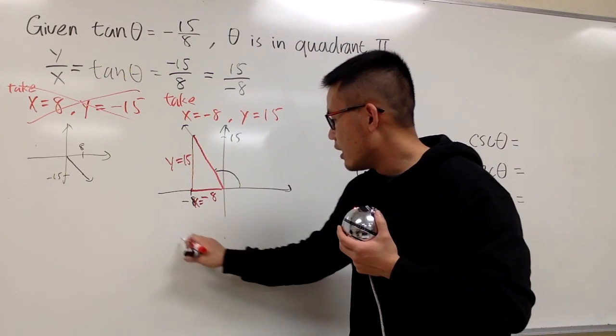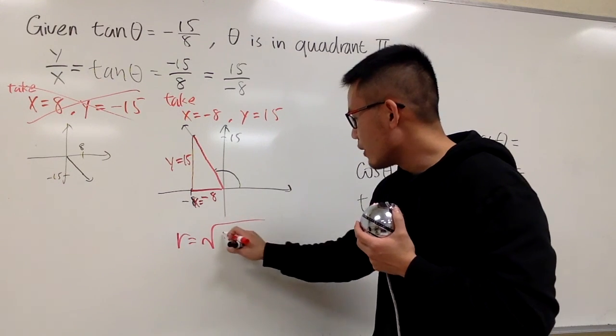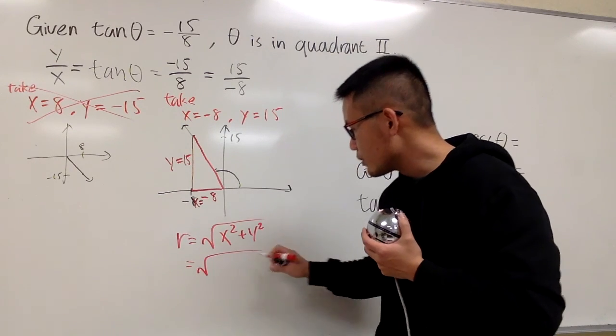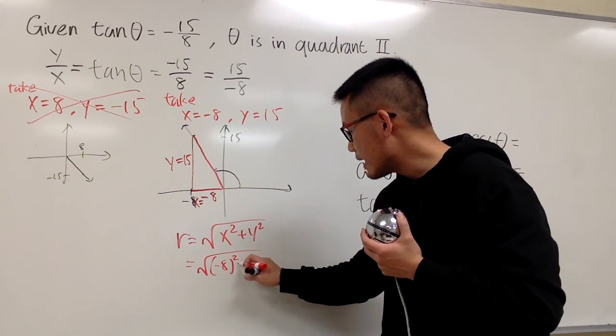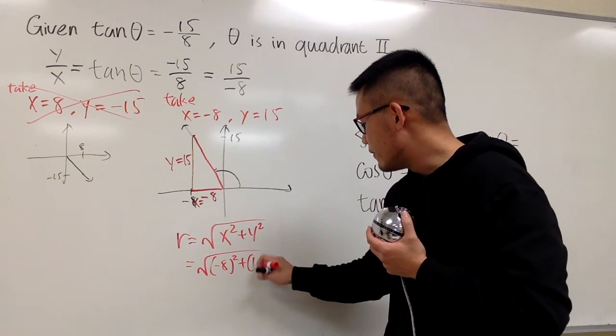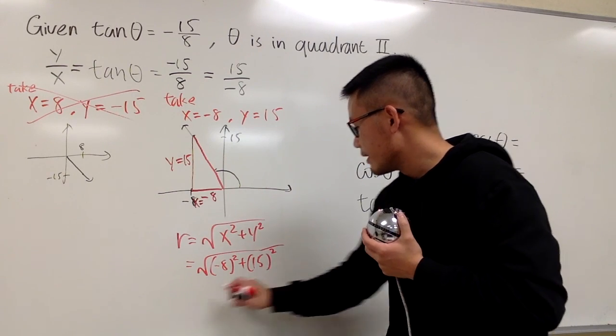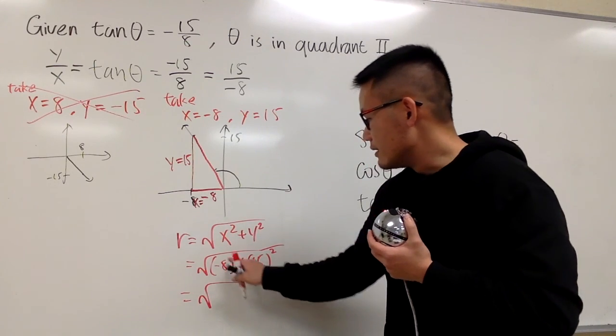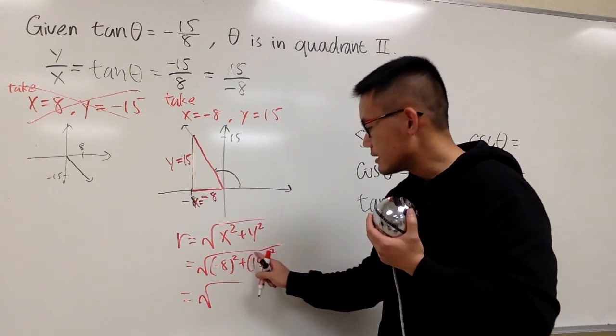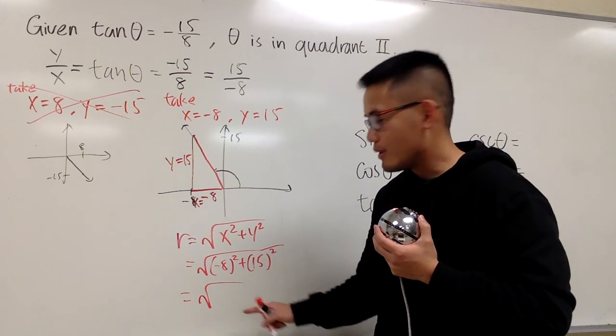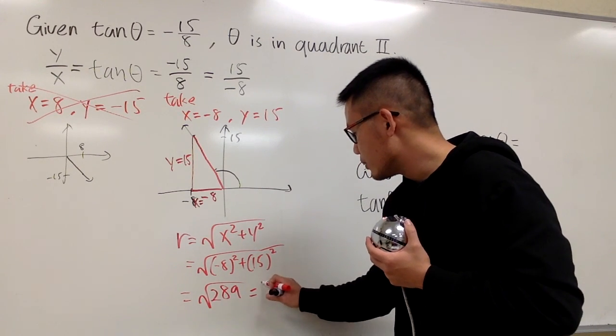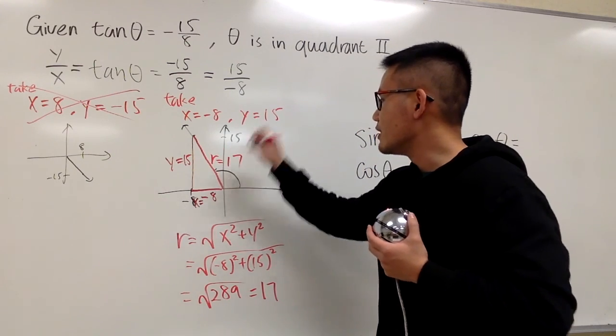How about r? r is this, pretty much the hypotenuse of this right triangle, and we know that r is equal to square root of x squared plus y squared. And you know this is square root of x, which is negative 8, square that, plus y, which is 15, square that, and just work this out. Square root, this is 64 plus 225, or to get this, 289, take the square root of that, is equal to 17. So r is equal to 17.